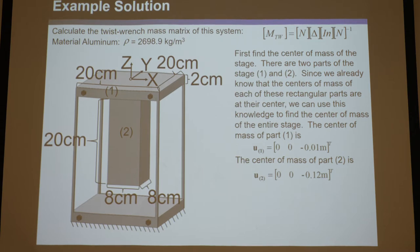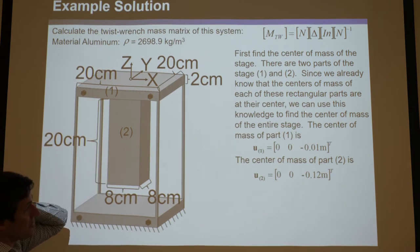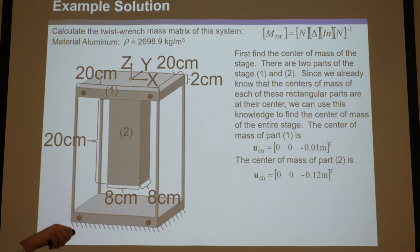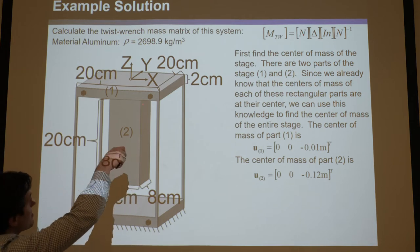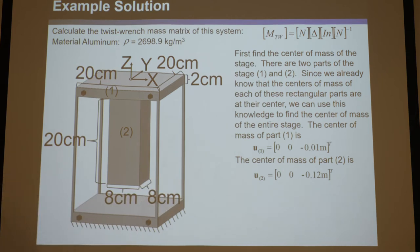Let's find a vector that points to the center of mass. There are two parts of the stage — part one and part two. Since we already know the centers of mass of each rectangular part are at their center due to uniform density, the center of mass of part one is (0, 0, −0.01 m), which is halfway down. The center of mass of part two would be (0, 0, −0.12 m) because you go down two centimeters and then this is 20 centimeters long, so half of that is 10 centimeters plus two is 12.